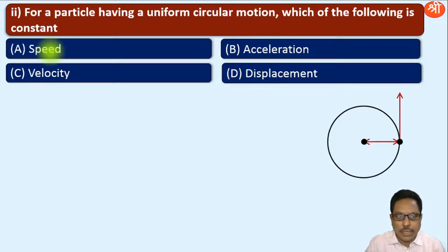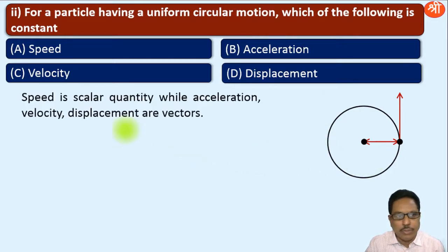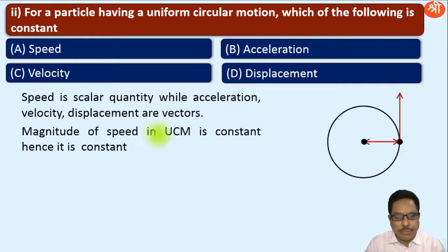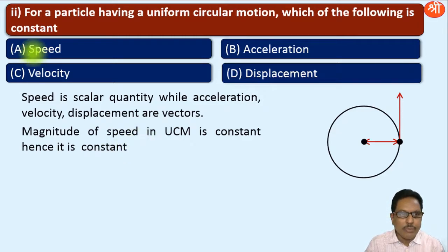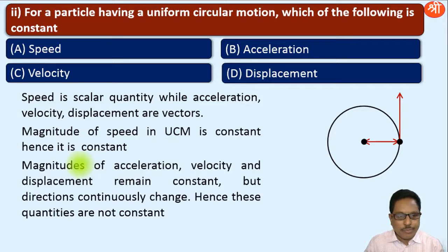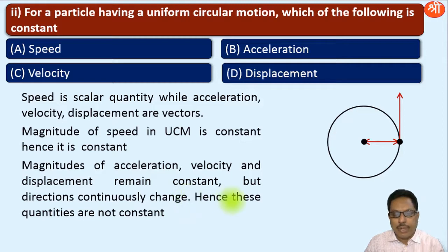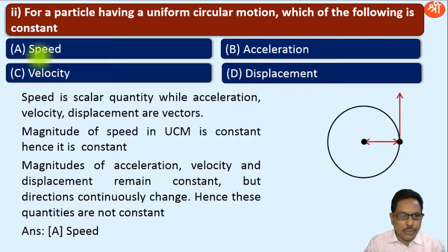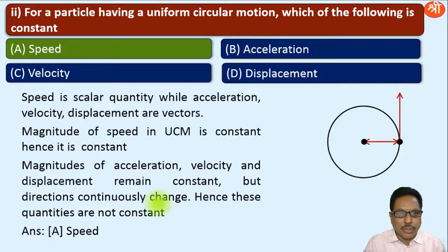Speed is a scalar quantity and has only magnitude. In uniform circular motion, the magnitude of speed remains constant, and since it has no direction, it is fully constant. The magnitudes of acceleration, velocity, and displacement also remain constant in UCM, but their directions continuously change — hence these quantities are not constant. Therefore, the correct option is A, that is speed.